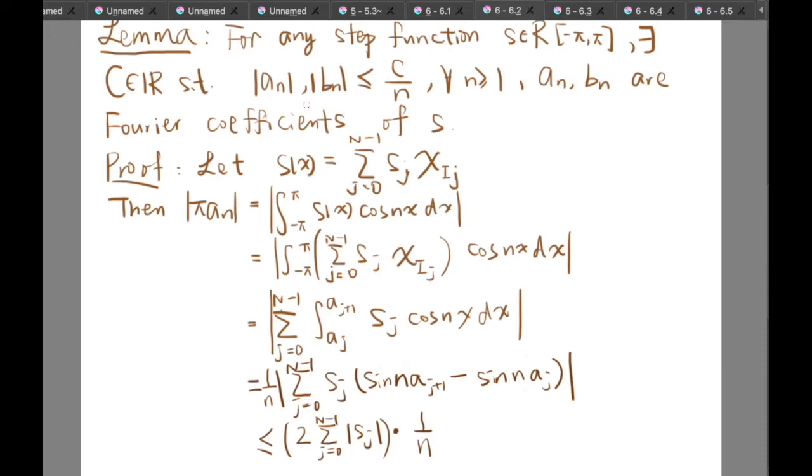So how can we prove it? First of all, we introduce the step function here and we previously stated that the step function can be written in this form. So we compute π|aₙ| and this is equal to the absolute value of the integral from negative π to π of S(x)cos(nx).